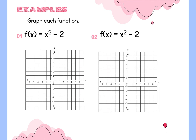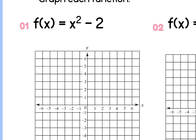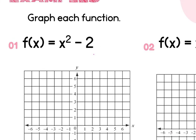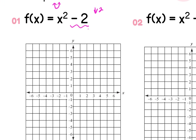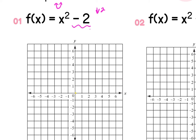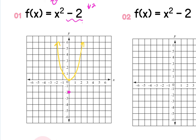First identify the parent function and its shape. For f of x equals x squared minus 2, the parent function is a parabola — x squared gives you the U shape. The minus 2 outside means shift down two. Where the normal parabola sits at zero, zero with up-one-out-one on each side, you take that vertex, shift it down two places, and draw the parabola from there. That's your shifted parabola.